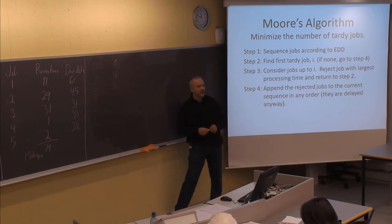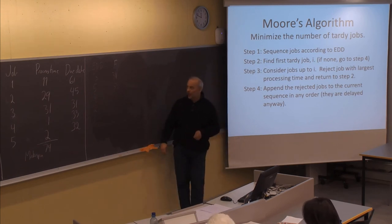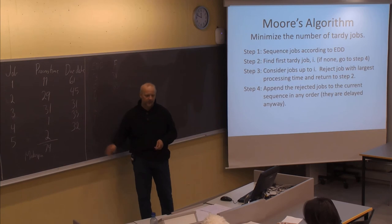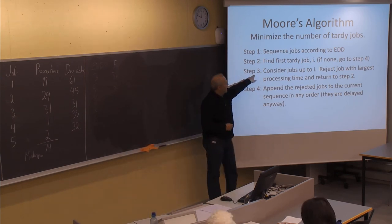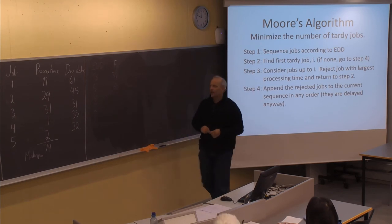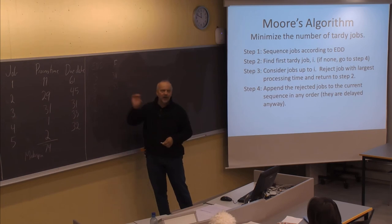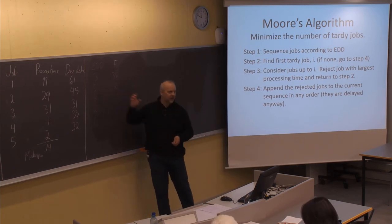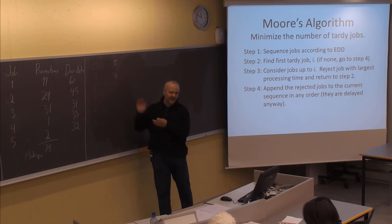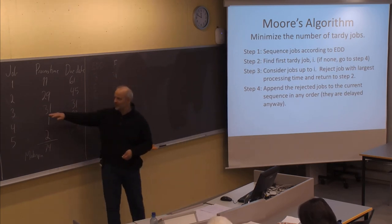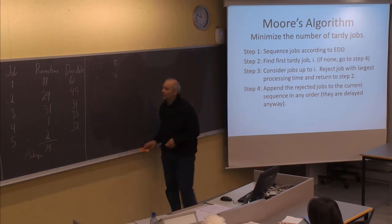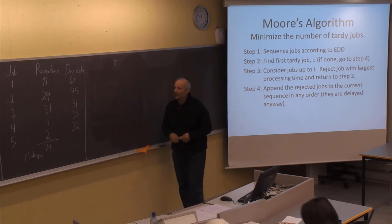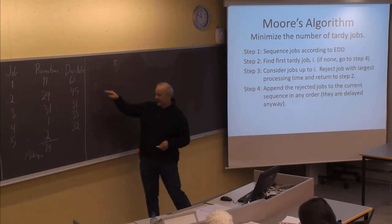Among these two jobs, 31 is in time but 33 is delayed — job number five is one day delayed. According to step three, we consider the jobs up to job five, which are three and five, and reject the largest job among these two. The largest job is job number three — 31 days is much larger than two. So we reject job number three and continue with the remaining sequence.